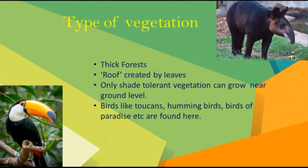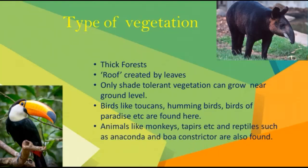The rainforest is rich in fauna. Birds like toucans — as you can see in this picture — hummingbirds, and birds of paradise are found here, and they make loud noises in the forest. Animals like monkeys and anteating tapirs — this is the tapir in the picture — are also found here. Many reptiles like snakes and crocodiles are found here, and anacondas and boa constrictors are some other species. There are also many fish, including the flesh-eating piranha, which is found in the river.